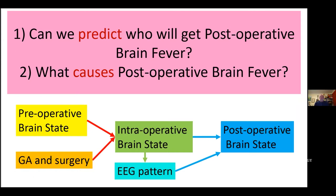Can we predict who's going to get post-operative brain fever, and what are the causes? You can imagine a simple block diagram: the patient comes with a certain pre-operative brain state — a robust brain or a fragile brain. They are exposed to general anaesthesia and the pro-inflammatory processes of surgery to produce the intraoperative brain state. We get a window of that intraoperative brain state by looking at the EEG pattern. There's quite a lot going on inside the brain that we can't see on EEG. And then this results in the post-operative brain state.